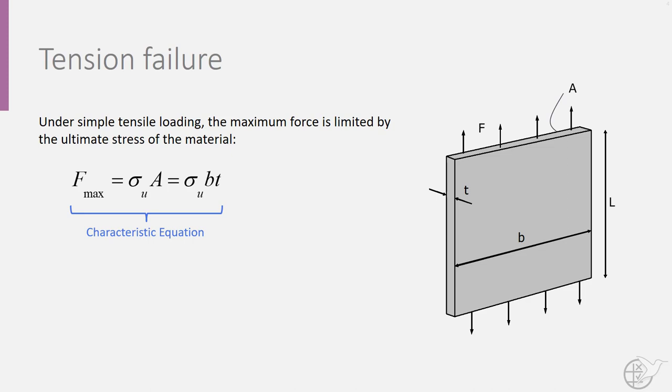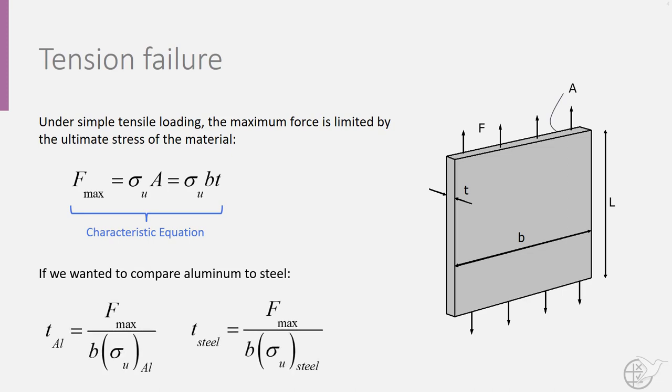If we want to compare two materials for our design, we can use the characteristic equation. Let's say we want to compare an aluminum alloy to steel. We know these materials will have different ultimate strengths, so we can substitute in the values for these two materials in order to compare them. No matter what material we choose, we want to achieve the same structural capability, so f max will be the same for both materials.